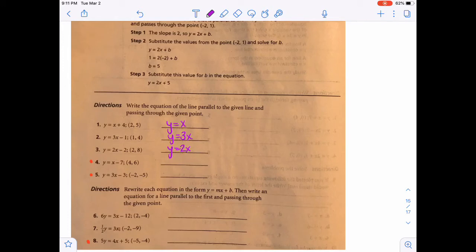So backtracking to number 1, we say y equals x, and we don't know the b. So we have to plug in the 2 and the 5. So the 5 is the y, and the 2 is the x. And so then you subtract 2 on both sides, and you get 3 for the b. And so then you just say plus 3.